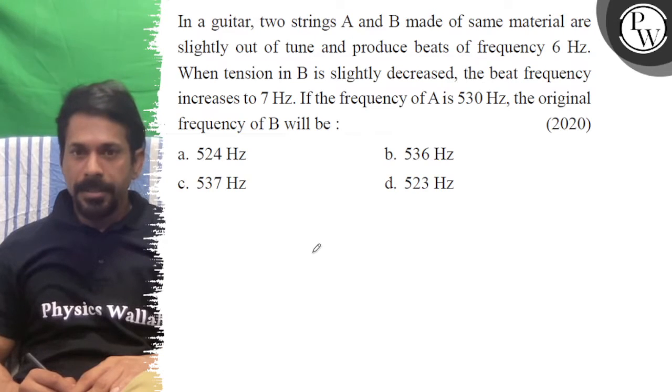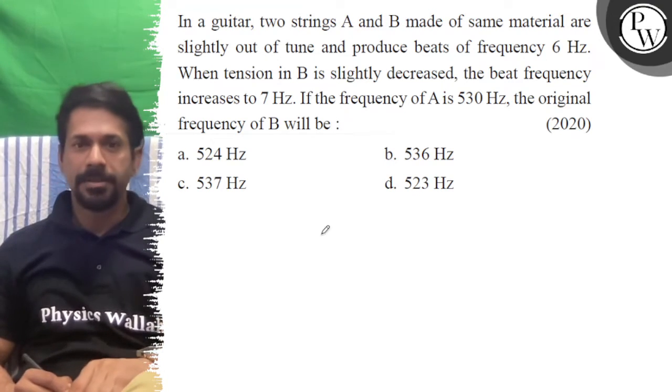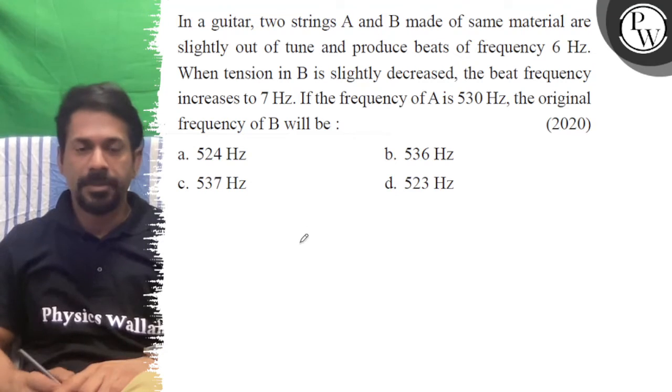When the tension in B is slightly decreased, the beat frequency increases to 7 hertz. If frequency of A is 530, then what is the frequency of B?